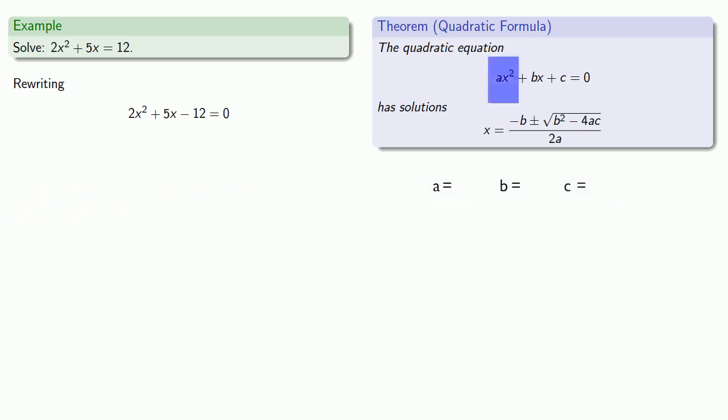So a is the coefficient of x squared, so for our equation a equals 2. b is the coefficient of x, so in our equation b is equal to 5. And c is the constant term, so in our equation c is equal to negative 12.